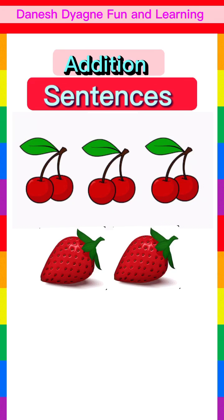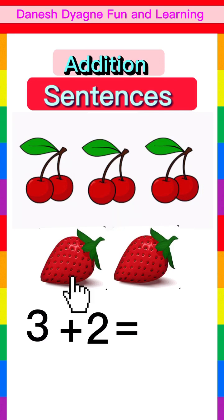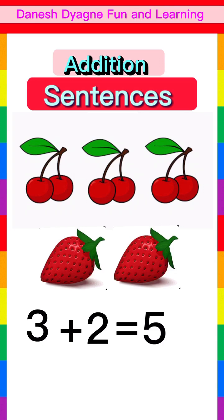First, we write here 3 plus 2 equals... Now let's count the total number of fruits. 1, 2, 3, 4, 5. The answer is 5. So the addition sentence is 3 plus 2 equals 5.